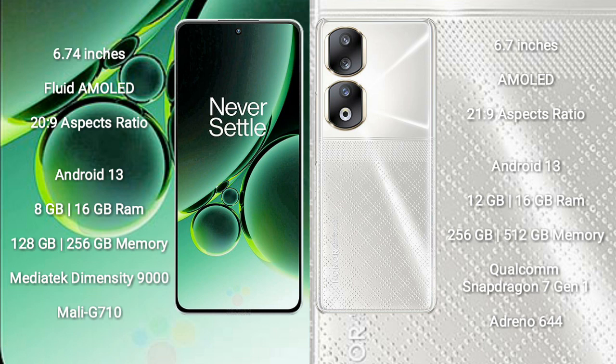OnePlus Nord 3 comes with 8GB or 16GB RAM and 128GB or 256GB internal storage, powered by the MediaTek Dimensity 9000 processor with a Mali-G710 GPU.